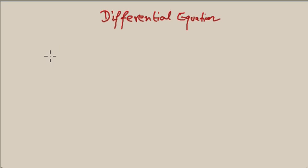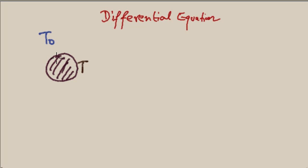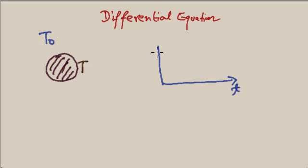The example is Newton's Law of Cooling. Suppose this is a ball and its temperature is T, and the outside temperature is T₀. What Newton did was plot the temperature of the ball with respect to time — this is the time axis and this is T, the temperature of the ball — and he got a curve like this.